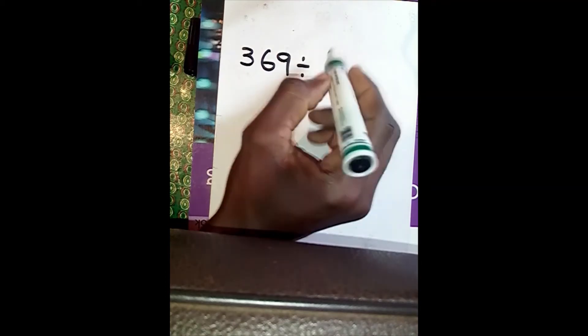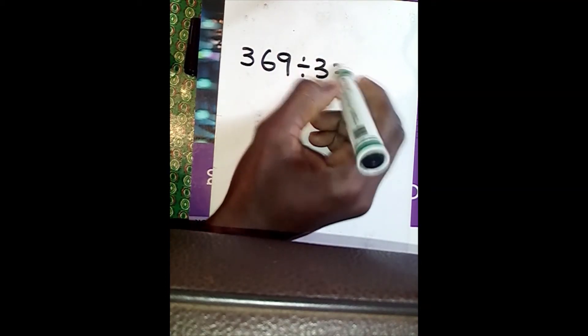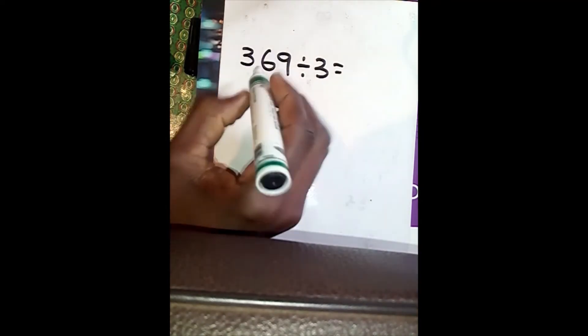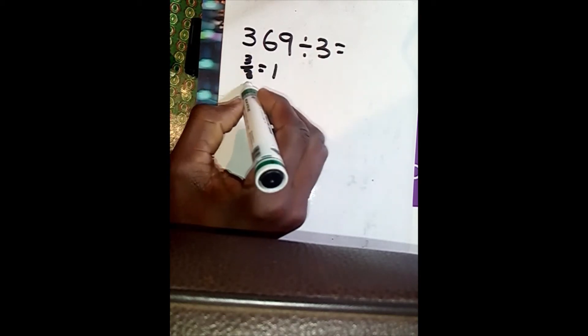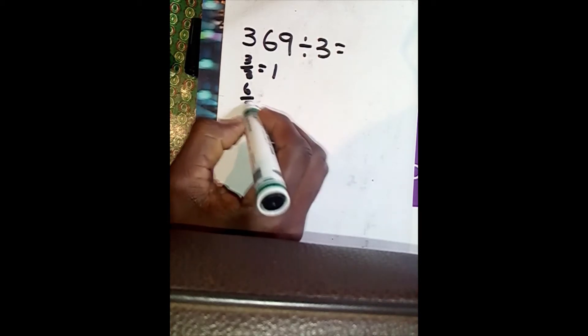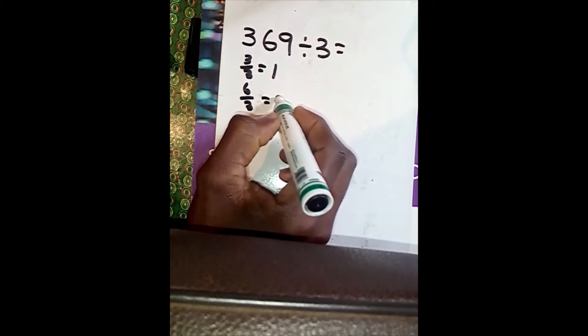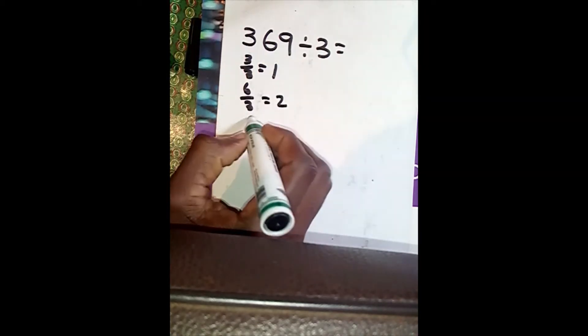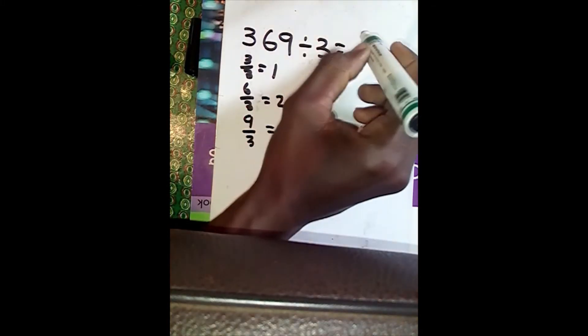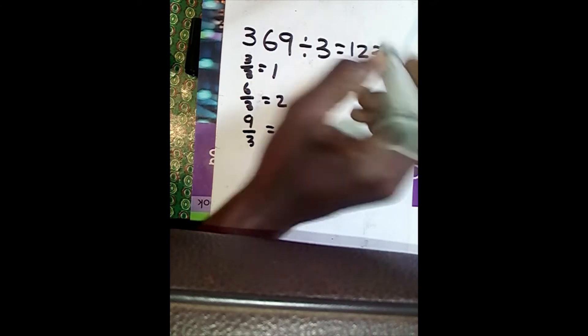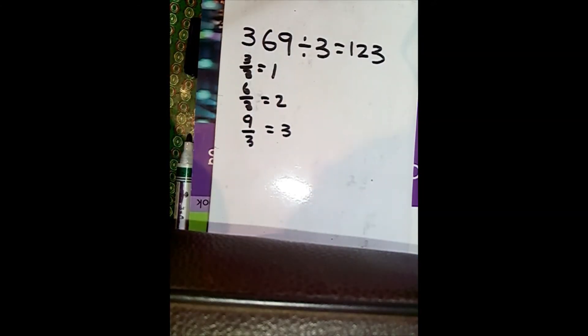Now let's take it further. Let's say you are given 369 divide by 3 — what do you do? You do the same. You say 3 divide by 3 equals 1, come to the second digit: 6 divide by 3 equals 2, come to the last: 9 divide by 3 equals 3. The answer is 123. Simple as that.